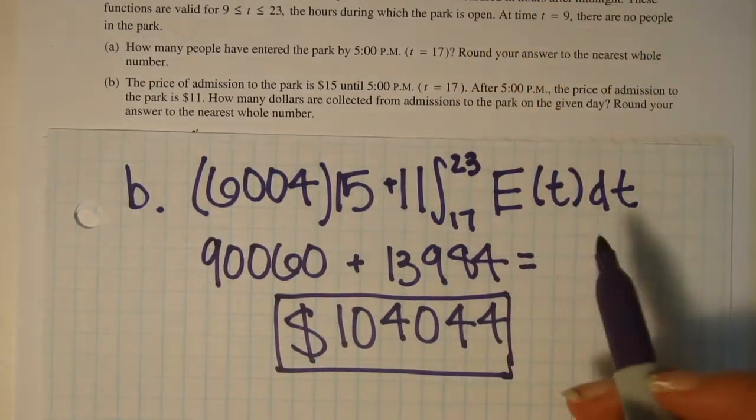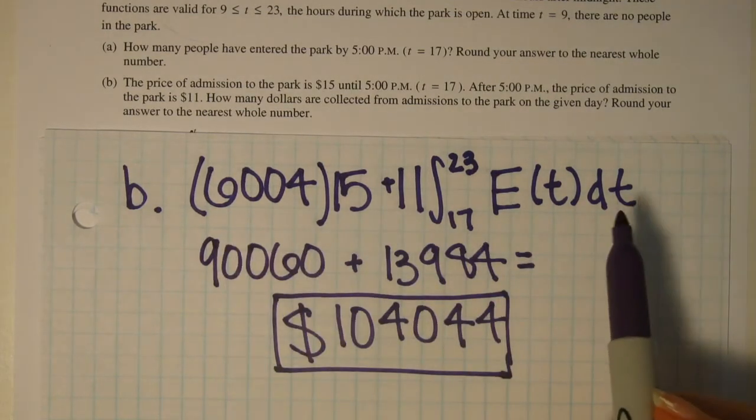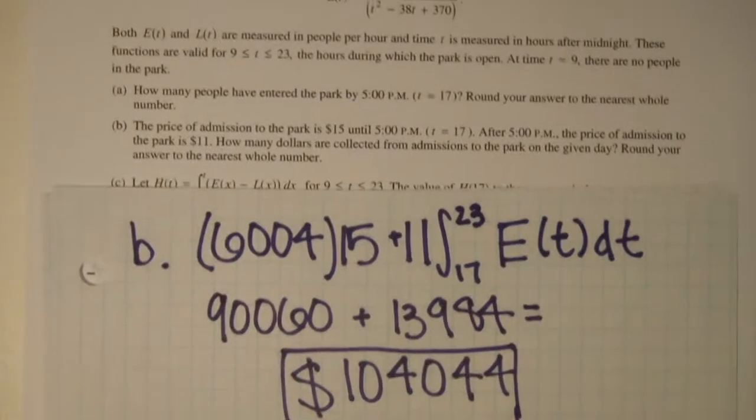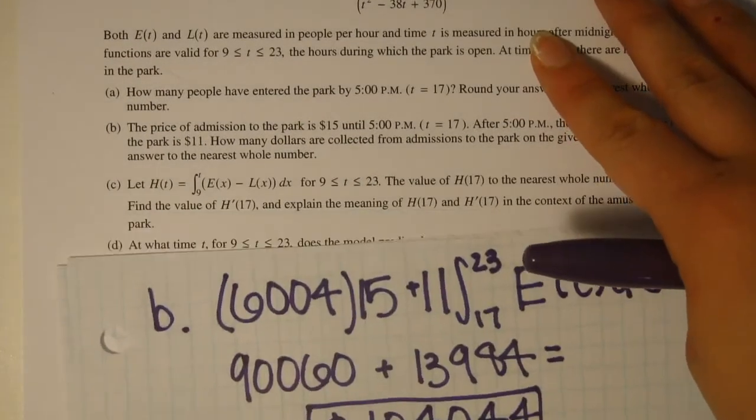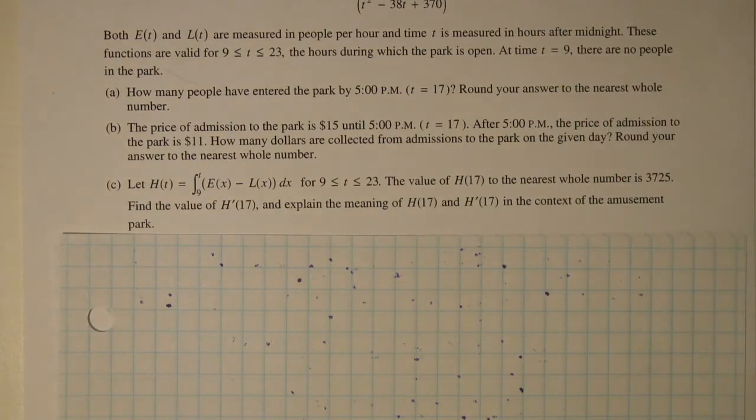For this problem, you get one point for setting it up. So make sure that you have your setup nice and clear and correct. Moving on to part C. C says, let h(t) equal the integral 9 to t, E(x) minus L(x) dx, for 9 to 23.